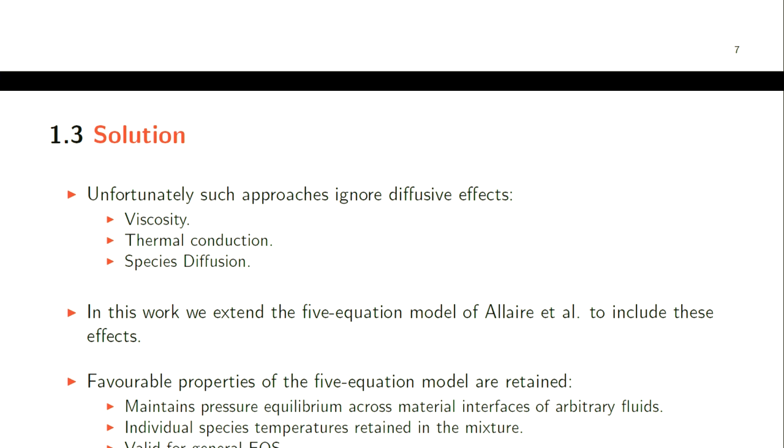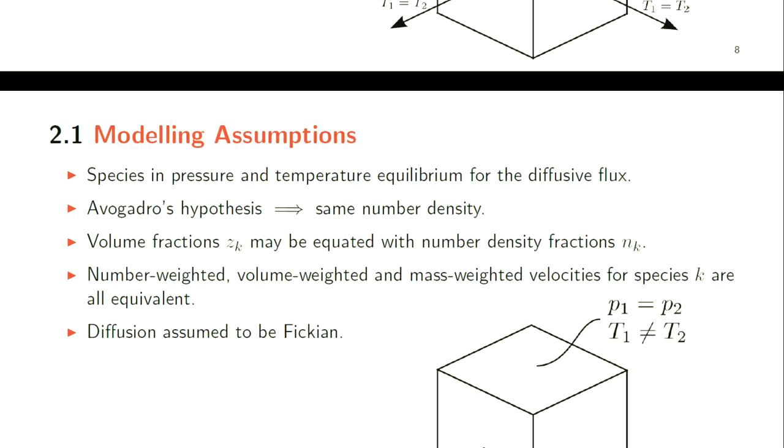Briefly going through the derivation - this goes against what I just said, but we assume the species are in pressure and temperature equilibrium, but only at a single point on the face where the diffusive flux acts. In the rest of the computational cell, using isobaric closure, the pressures for all species are equal but the species temperatures are allowed to vary.